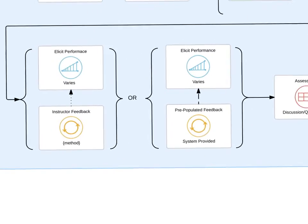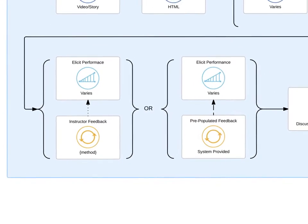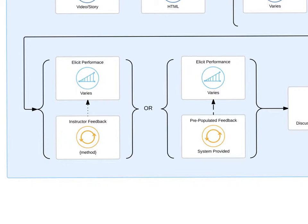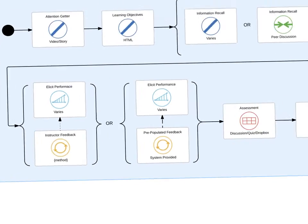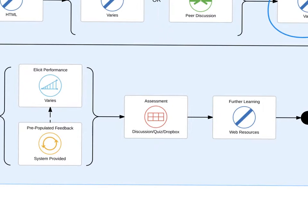Once the lesson is provided, there are opportunities to elicit performance from the learner. This could be through instructor-provided feedback on a performance activity, or pre-populated feedback through a quiz in an online environment. Finally, a formal assessment is provided, which can be done through discussions, quizzes, or drop box assignments.